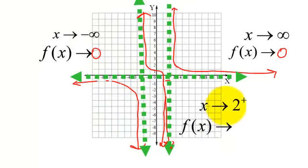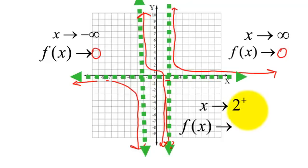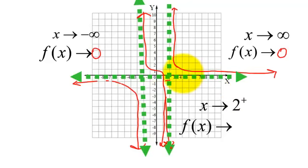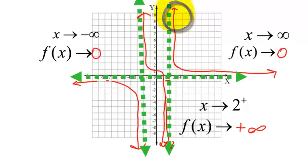What if I ask you: as X approaches 2 from the right side — that's what this little plus sign means, from the positives. This means as X is approaching 2 from the right side. You have to find where X is 2. I'm supposed to get really close to 2, coming from this side. Why am I coming from this side? Because it said come from the right, come from the positives. When I get really, really close to 2 from the right side, what is my F of X doing? It looks like it's going to positive infinity.